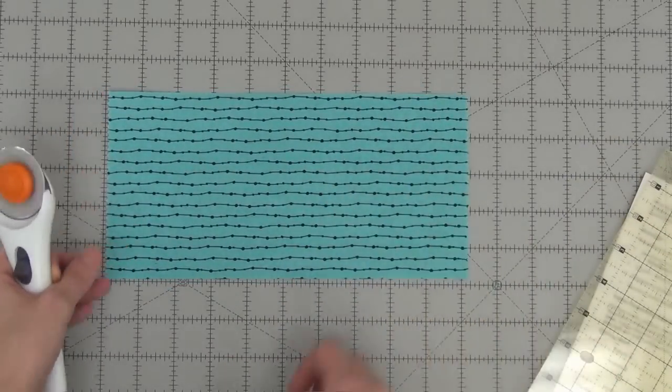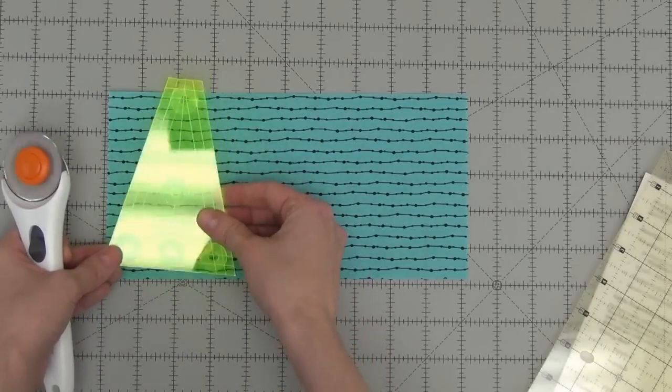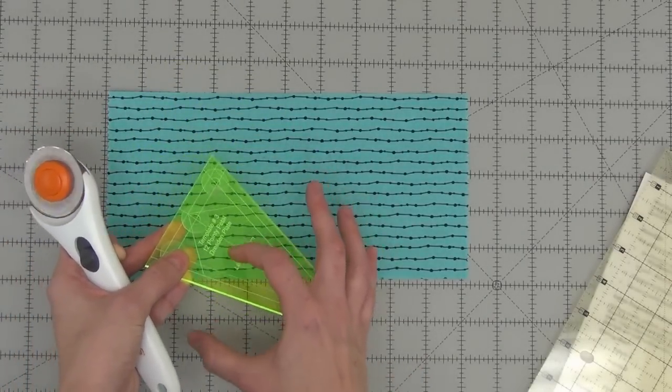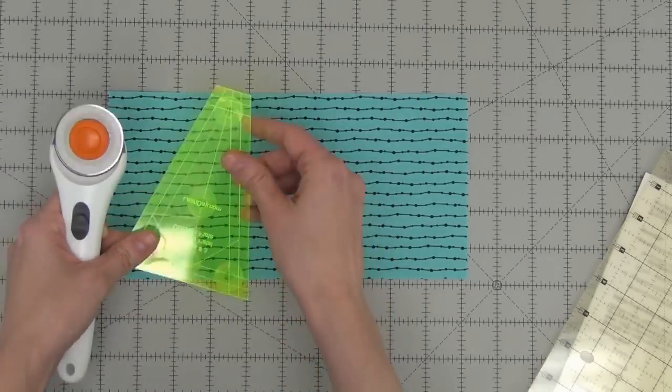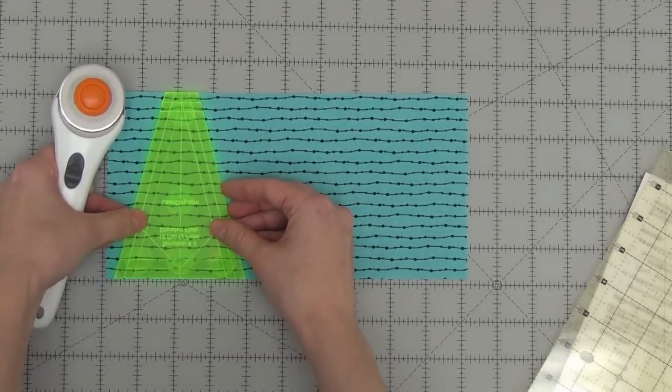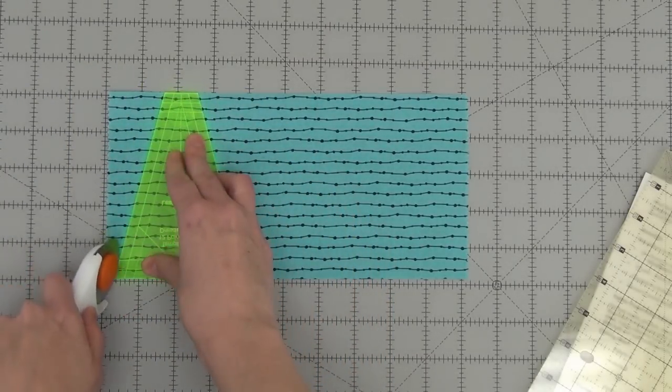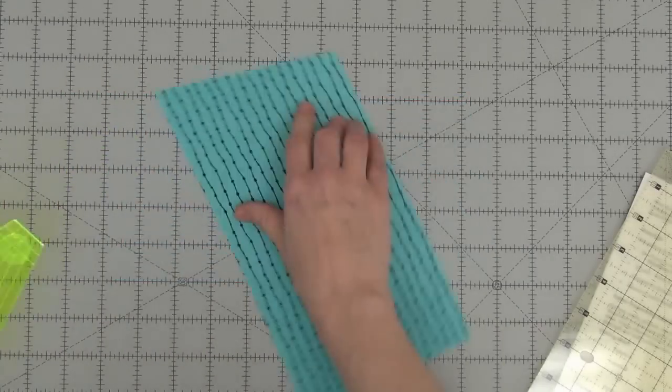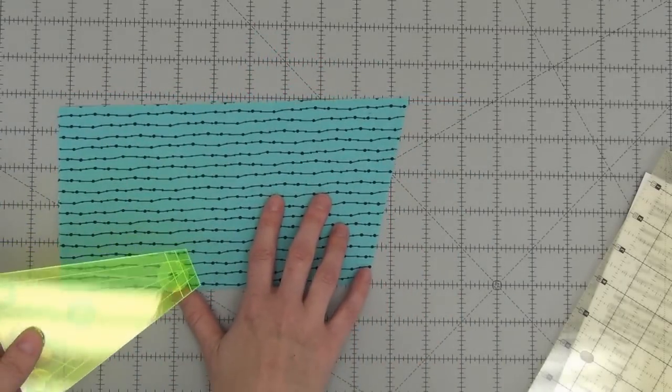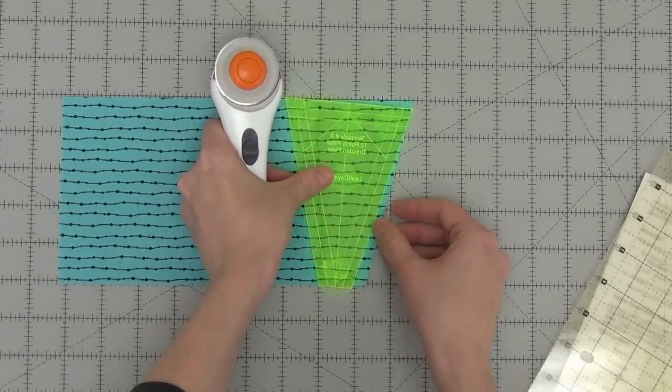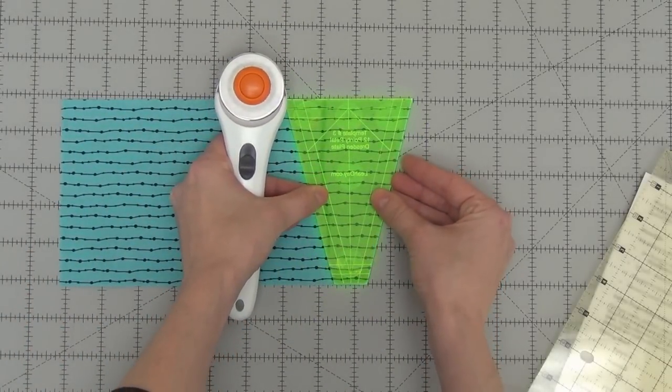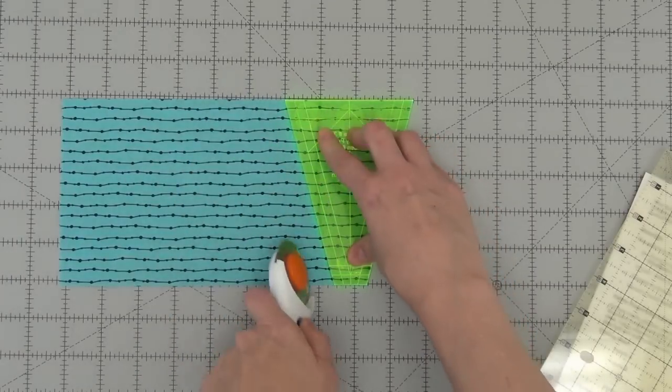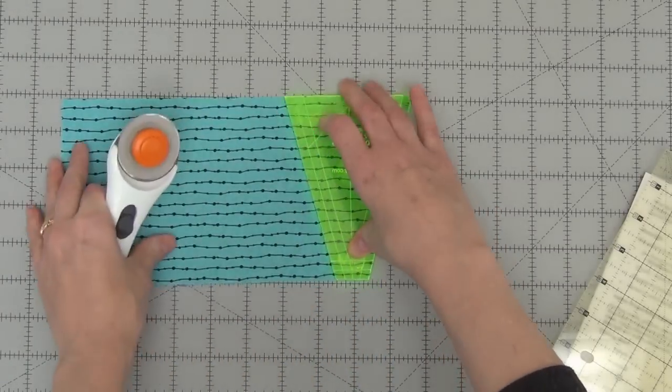And then now I've got this basically 5 by 10 inch strip. I'm going to take my Dresden Plate template and this is number three and I have attached some True Grips to the back here so that way it grips really nicely and it's not going to slip as I cut out these shapes. So first I'm going to cut this side, then I'll flip the whole thing over, just rotate it around and line back up again. And I do it that way so that way I'm continuing to cut with my dominant hand. Super important.